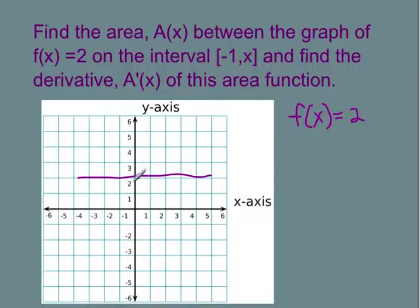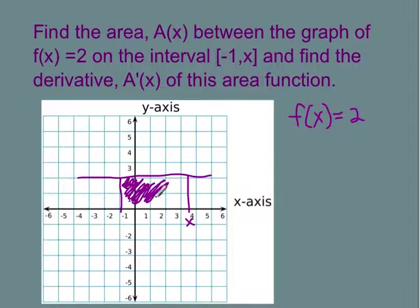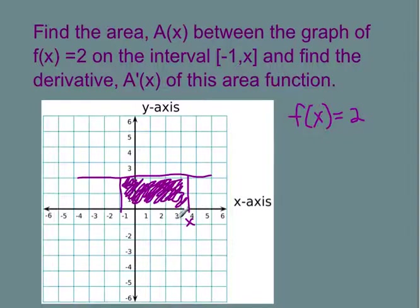The function says that we're going to go from negative 1, which is going to be right here, to some value x. So I'm just going to label a value x over here. I want to find the area under the curve from negative 1 to x. To calculate that area, I'm going to see that this distance right here is going to be x plus 1.